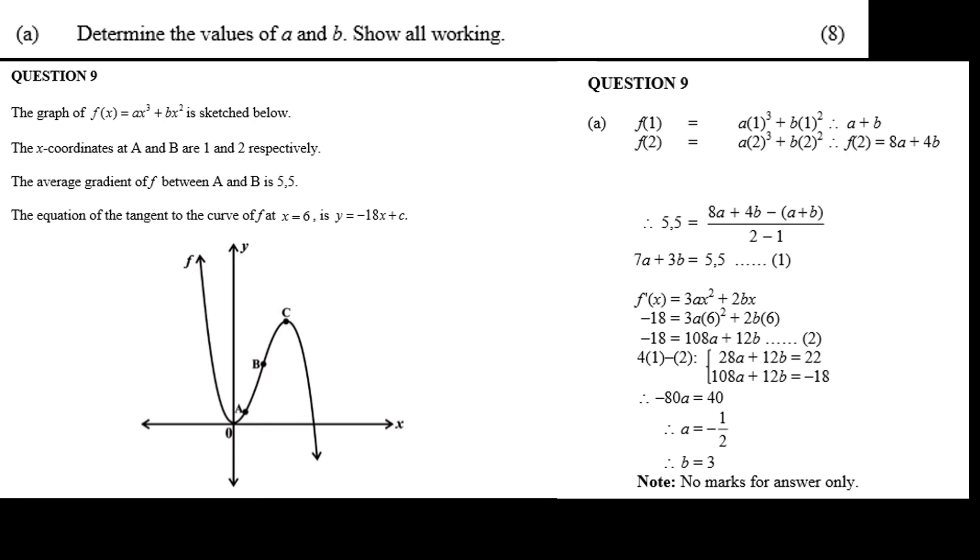Now the gradient between a and b is f of 2 minus f of 1 all over 2 minus 1. Or 8a plus 4b minus a minus b all over 2 minus 1. Or 7a plus 3b equals 5.5. Call this equation 1.